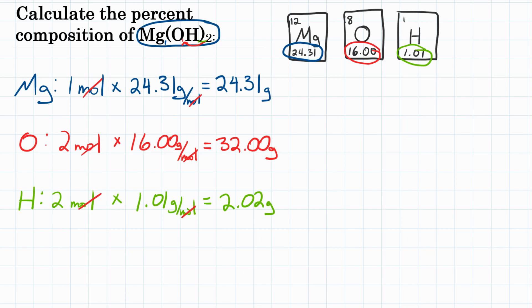We have the grams of each element. We also need the total of all the grams of these elements, or the molar mass — the mass of a mole of this compound. So we're going to add all three together, and we get 58.33 grams. That's the total molar mass, or how many grams one mole of this compound would be.